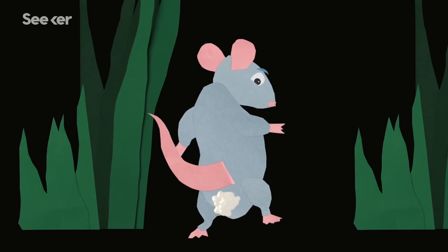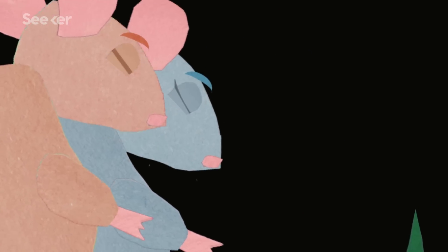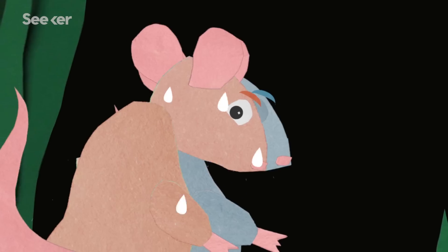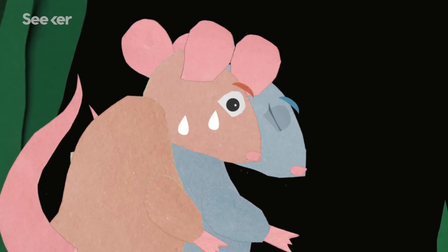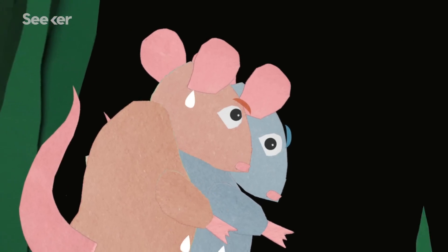However, where there's a will, there's a way, and males that have not yet had the opportunity to mate with a specific, plugged female will often work tirelessly to dislodge her current plug before copulating and then depositing one of their own.